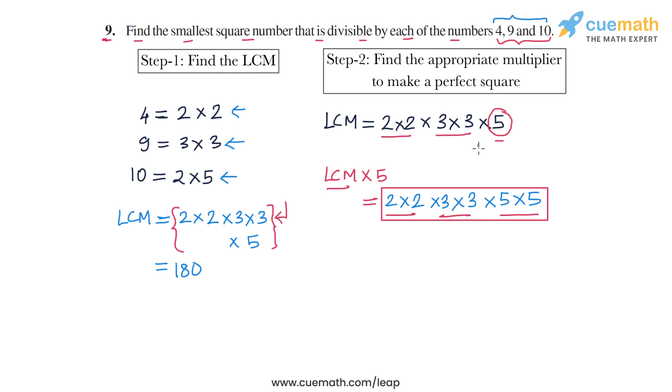So what is this number? This number is 4 into 9—2 into 2 is 4, 3 into 3 is 9, 5 into 5 is 25—and 4 into 9 is 36, 36 into 25 is 900. Or you could just take the LCM into 5. LCM is 180, so 180 into 5 is 900. So the answer for this question is the smallest such number is 900, and this completes question number 9.